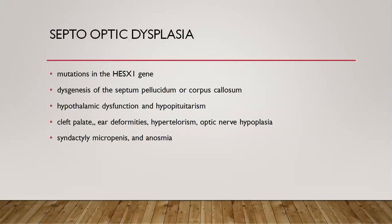Septo-optic dysplasia is not a common disorder. The gene is HESX1, and it involves dysgenesis of the septum pellucidum and corpus callosum along with hypothalamic dysfunction, manifesting with hypopituitarism among other features.